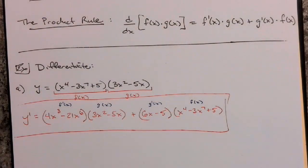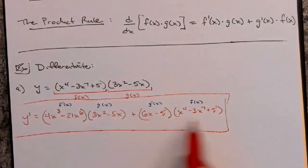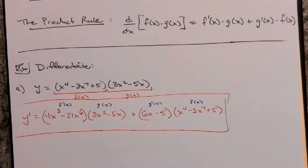If I wanted you to simplify this, you would actually have to distribute through — FOIL here, distribute through all terms, then combine like terms. If I'm just testing the rule, I'll ask you to not simplify. Later in the course, you'll have to simplify, but that's something you should know from algebra.